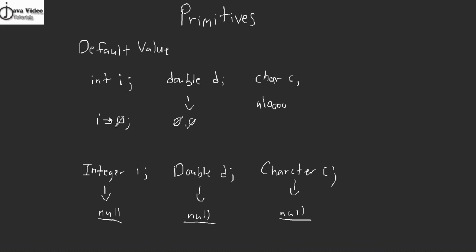Whereas if you use the primitive counterpart and try to access the value inside the primitive without assigning a value, there would be no error. It would just be treated as zero for an int, 0.0 for a double, or the default Unicode null representation for a char. It's a little bit safer in the sense that you won't get an exception, but that can also bite you — because you won't get an error saying you haven't assigned a value. The code will just treat it as zero, which might do some strange things depending on how you handle zero versus null.